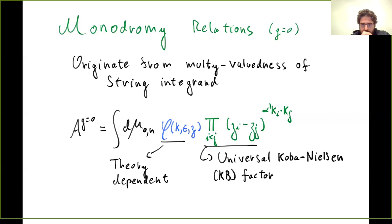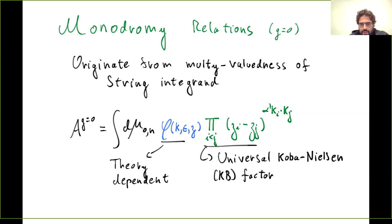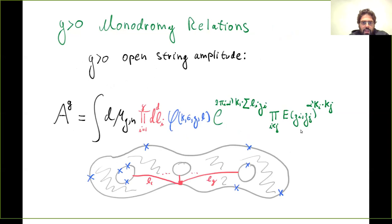The origin of monodromy relations in string theory comes from the multi-valuedness of the string integrand. The string amplitude has one piece that is theory-dependent but has no branch cuts, and a universal piece — the Koba-Nielsen factor — which is a multi-valued function on the moduli space. You can build a twisted homology theory on that, and extract relations from that homology, which are just the monodromy relations in this case. This is the universal part of string amplitudes.